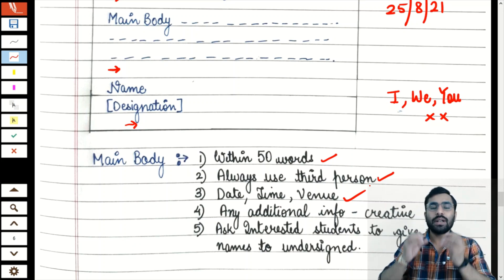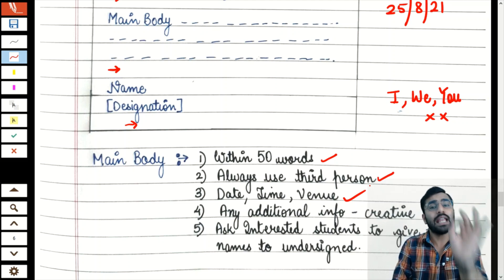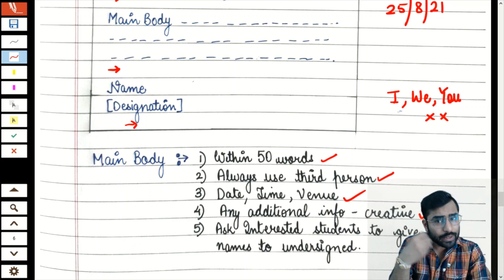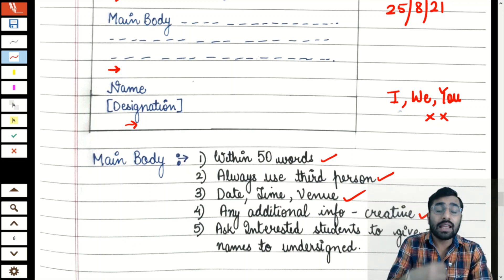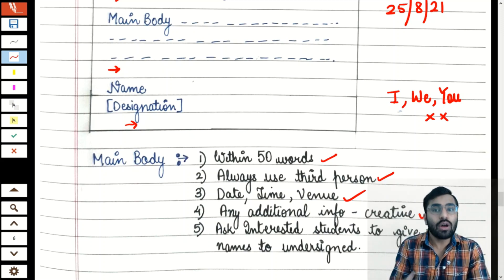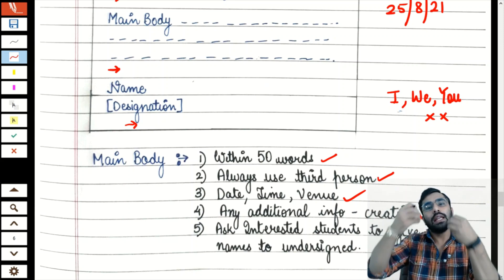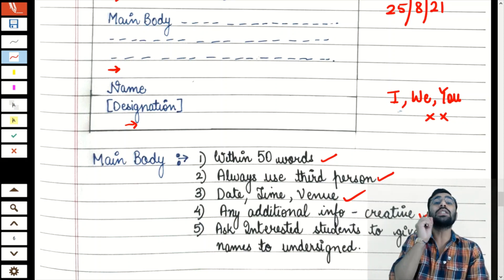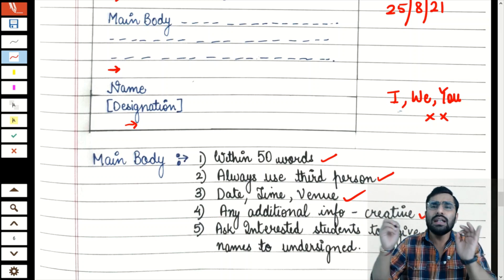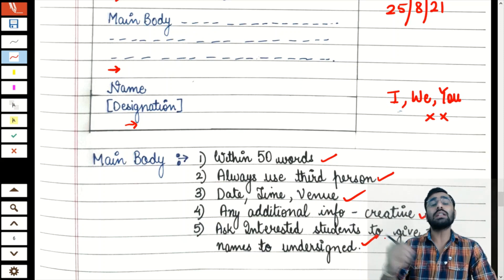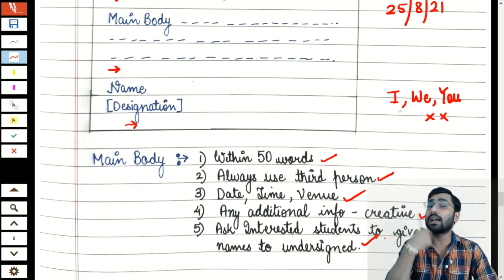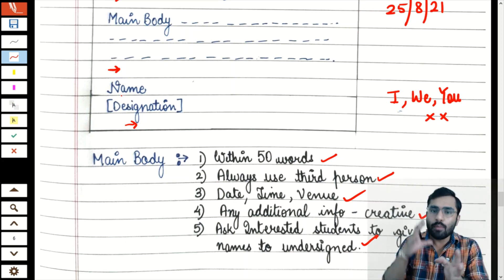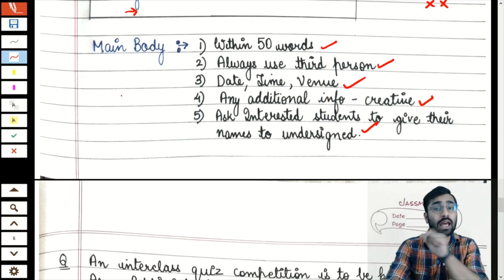Following these points will get you up to 2.5 marks. But if you want full 3 out of 3 marks, you need to add at least one additional sentence from your own creative thinking — related to the event. For example, for a blood donation camp, write 'Your contribution can save a lot of lives.' Or for a cultural event, mention its theme, like it's based on folk dance. This shows the teacher you put in extra effort. The last line is always common — inform interested students to contact the undersigned. Now let's implement all this with a solved example.